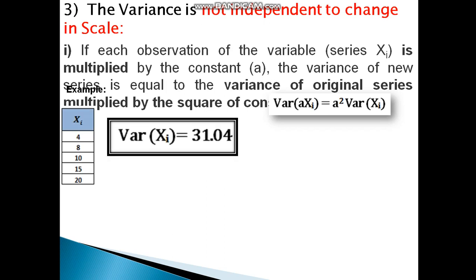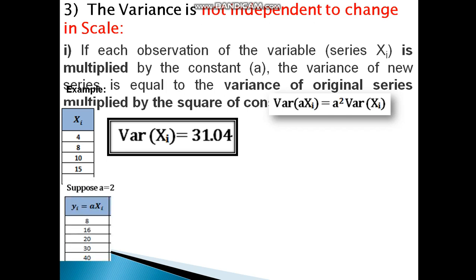For example, we have observations Xi: 4, 8, 10, 15, 20. The variance is 31.04. We define a constant a equals 2 and set yi equal to a times xi — that is, we multiply each observation by 2, giving: 8, 16, 20, 30, 40.